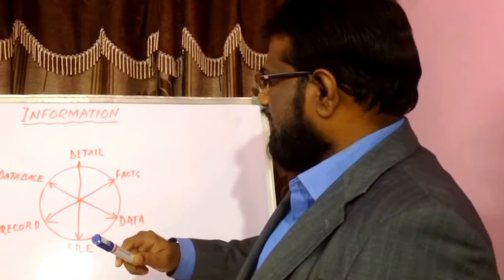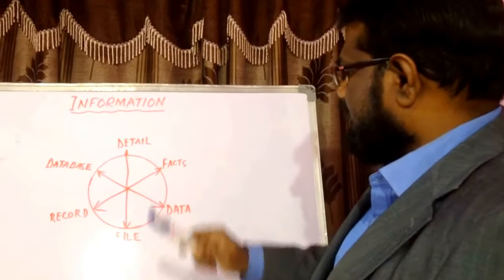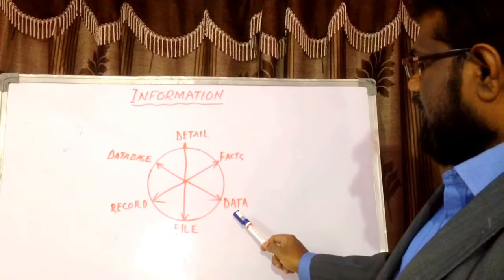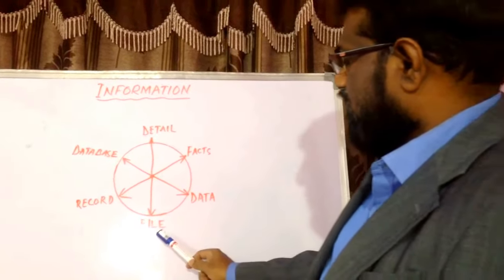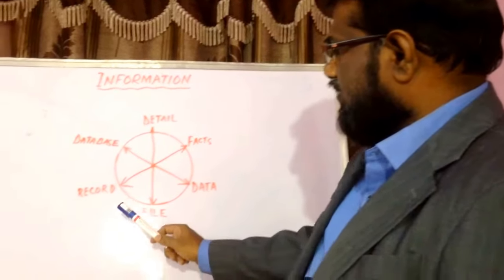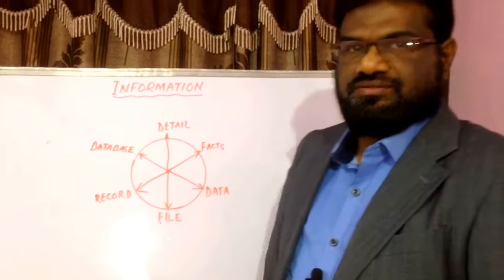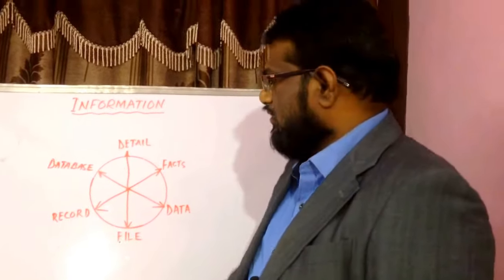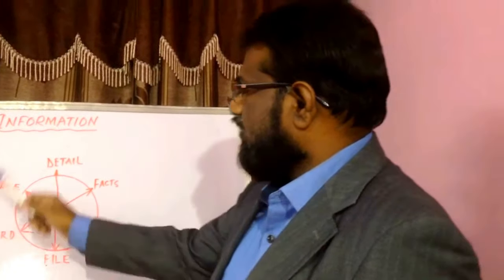There are many types of information: detail, facts, data, file, record, and database. All this we call information. So let's see one by one.